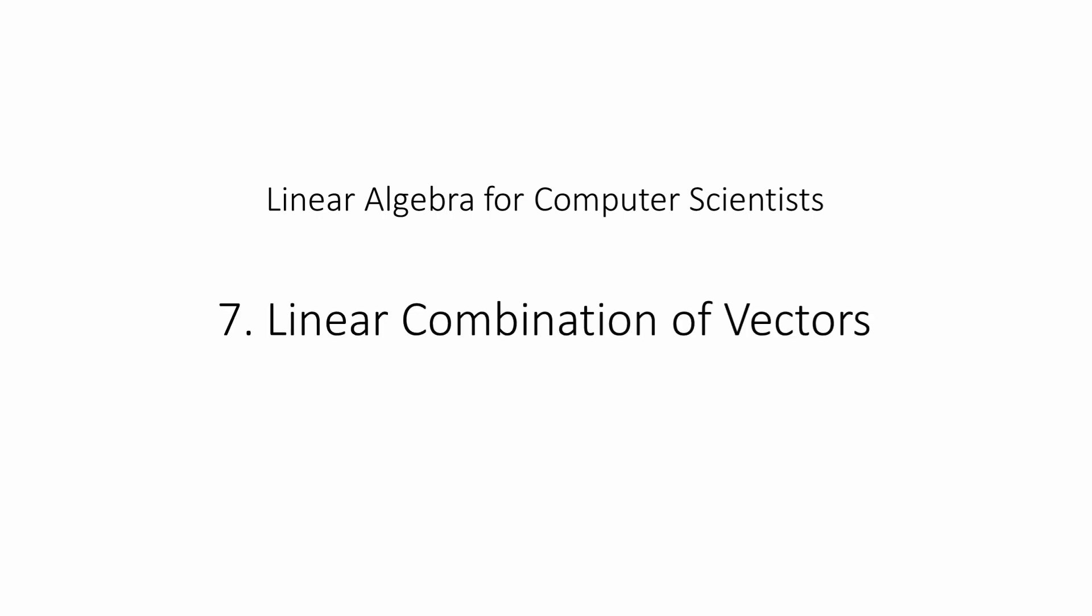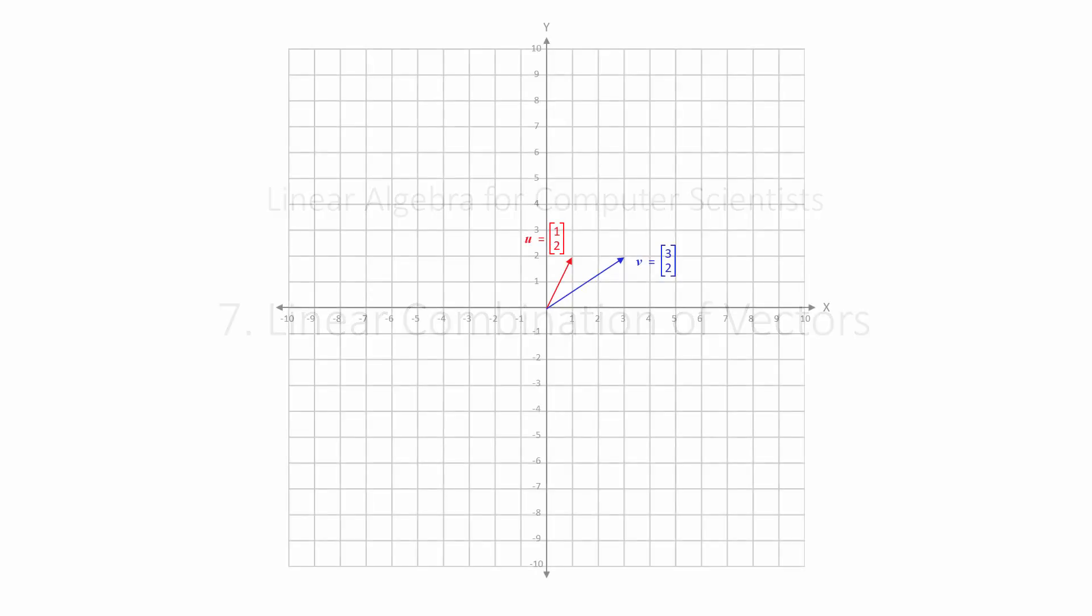A linear combination is the new vector that you obtain when you combine other vectors in a particular way. You can have a linear combination of two or more vectors. Linear combinations involve scalar multiplication and vector addition, two operations that you've already met. Let's see how to create a linear combination of two vectors.